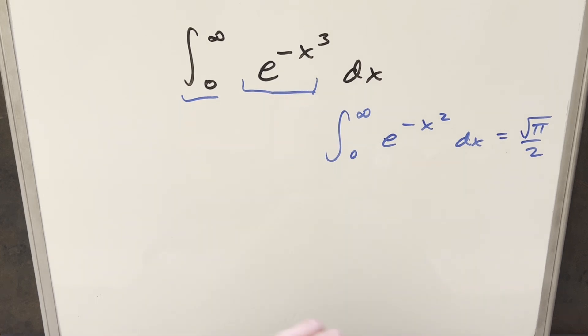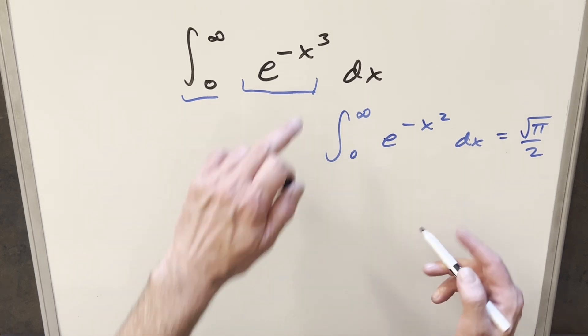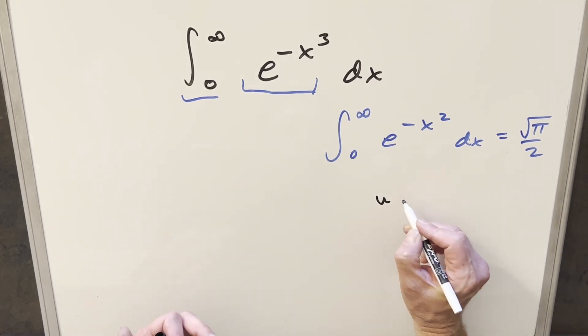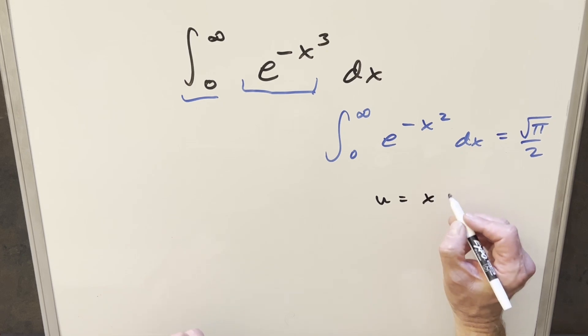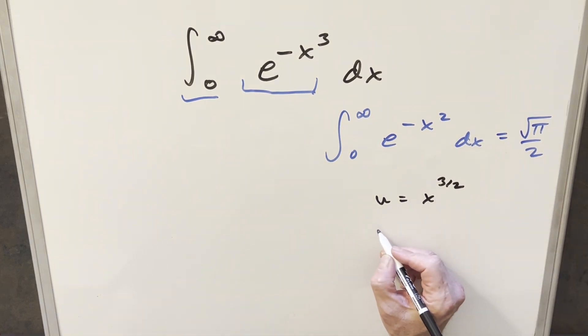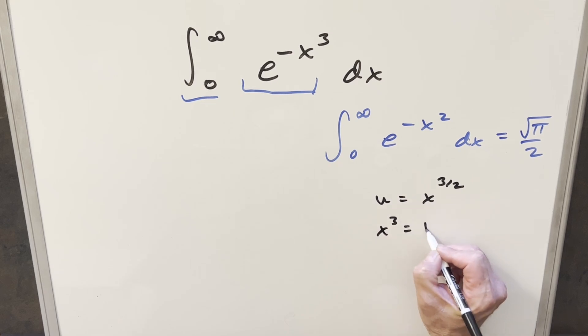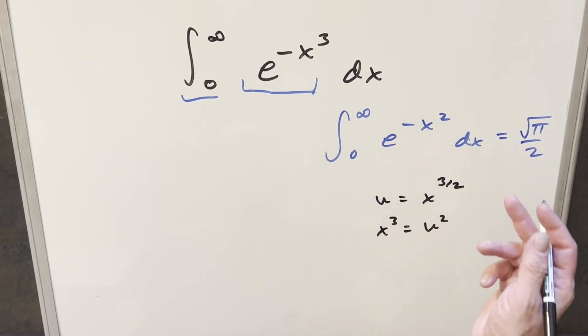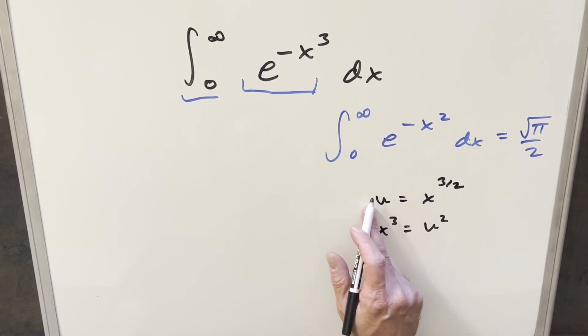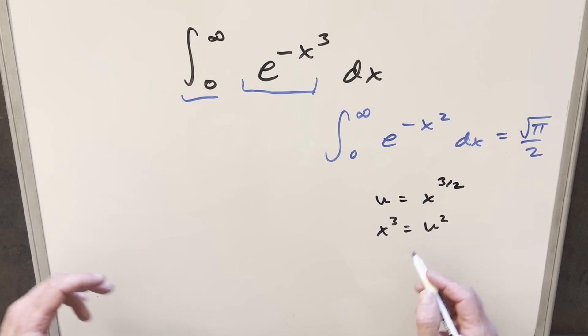I was thinking, could we do a u-substitution to get it in this form? What I tried was setting u = x^(3/2). Doing it this way, x³ equals u². So it works from that standpoint, but when you differentiate, you create another term and we'd have to substitute again. I didn't find this approach very helpful.